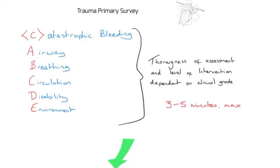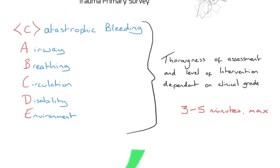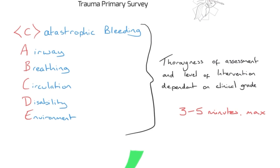Hello and welcome to Spear Medical Education. I'm Eric and today we're going to be looking at trauma primary survey. This is your primary survey - your top-to-toe systematic assessment trying to find and treat immediately life-threatening problems. There are a couple of different systems out there. The most common you'll see is the CABCDE system that we're using here.